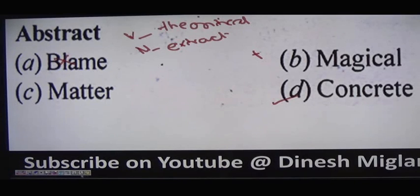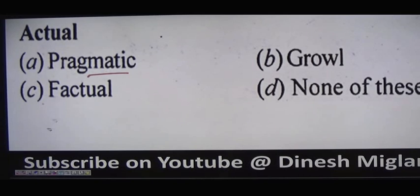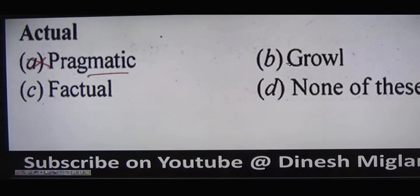Question number 5: 'actual.' Actual is a thing which is real or based on fact. Option A is 'pragmatic,' meaning a person who deals with things in a practical or realistic way — this cannot be our answer. Option B is 'growl,' used as a snarl or bark of an animal — generally for bears, wolves, and dogs. Option C is 'factual,' meaning something truthful, which is actually a synonym to actual. So there is no antonym among the options — we tick the fourth option: none of these.